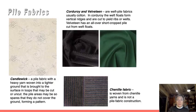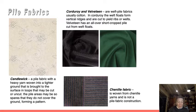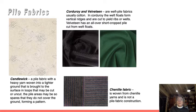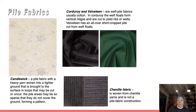Terrycloth differs from velvet and velour in that those loops are not cut — you can see them quite obviously. Corduroy, number 27, is probably familiar — it has vertical ridges and can be used for both clothing and upholstery. It's a weft pile fabric, usually cotton. Velveteen, number 28, is similar — it has an all-over short cropped pile cut from the weft floats. On both corduroy and velveteen, the threads start as loops and are cut, giving that soft feel similar to velvet.